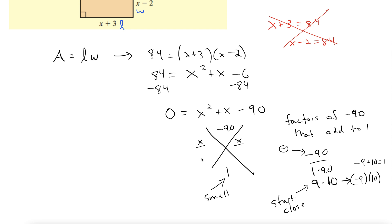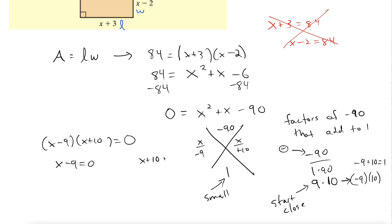This is the diamond method — negative 9 and plus 10. So this factors as x minus 9 times x plus 10 equals 0. Now we can use the zero factor property, which lets us set each factor equal to 0. So x minus 9 equals 0 gives us x equals 9, and x plus 10 equals 0 gives us x equals negative 10, which we throw out because we want our length and width to be positive.